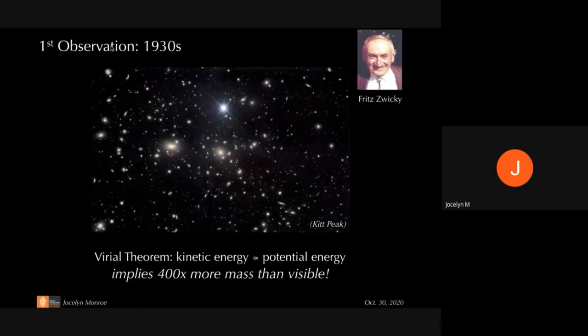This used the Virial Theorem to relate the kinetic energy — the energy associated with motion — to the potential energy associated with gravitational binding. The amazing thing was that this new method implied there was about 400 times more mass interacting gravitationally than you would infer from observing how bright these objects were. He hypothesized that maybe there was some dark form of matter that doesn't interact with photons but does interact gravitationally.